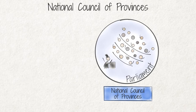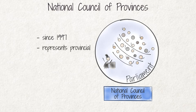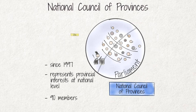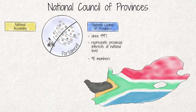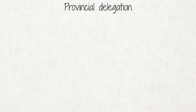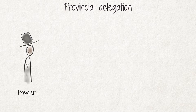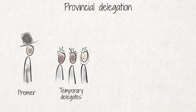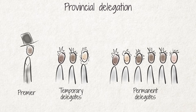The second house of parliament is the National Council of Provinces. It came into existence in 1997 and is the body that represents provincial interests at the national level of the legislature. The National Council of Provinces has 90 members. Each of the nine provinces nominates 10 delegates to this council. The delegation usually consists of the Premier, three other temporary delegates who can change from time to time, and six permanent delegates nominated for the full term of parliament. The party representation in the delegations must proportionally reflect the party representation in the provincial legislatures.